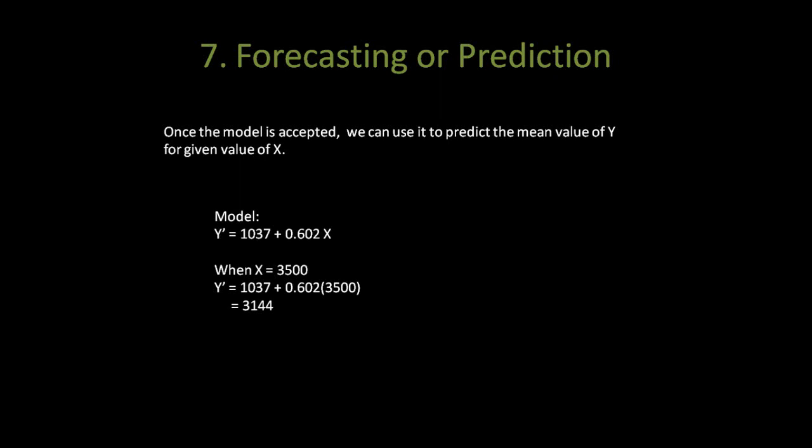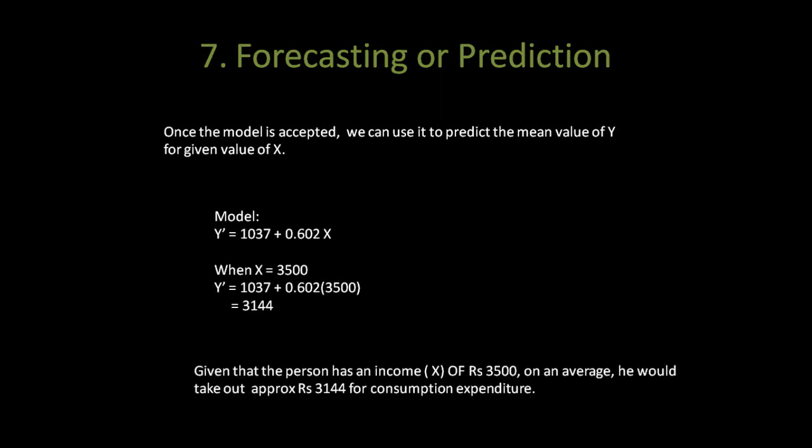Through this regression line we can see that when income had a specific value say 3500 what would be the expected consumption? So when we put 3500 as X we get Y' is equal to 3144. This means that given that the person has an income of rupees 3500 on an average he would take out approximately rupees 3144 for consumption expenditure.